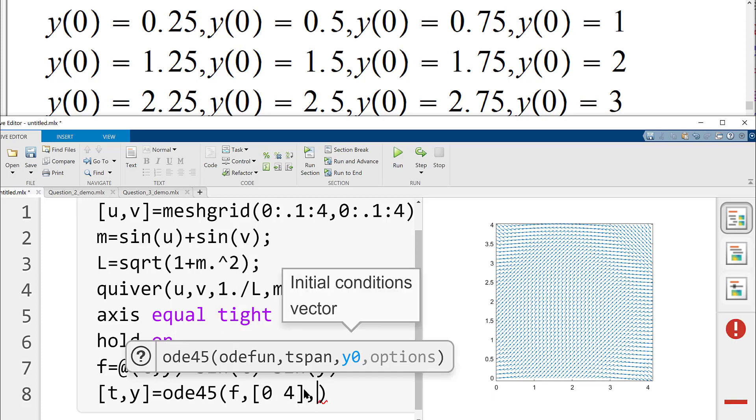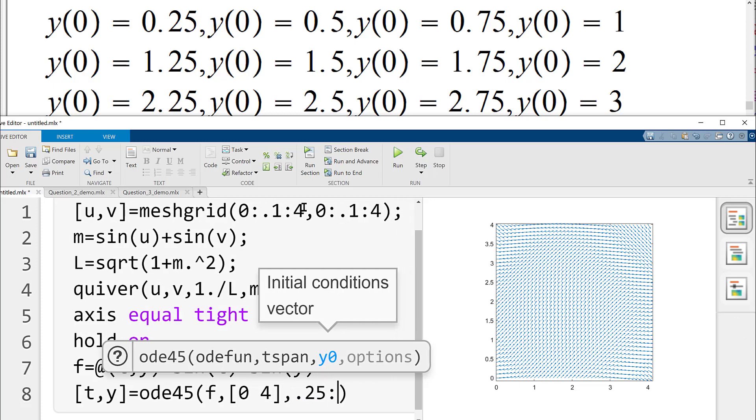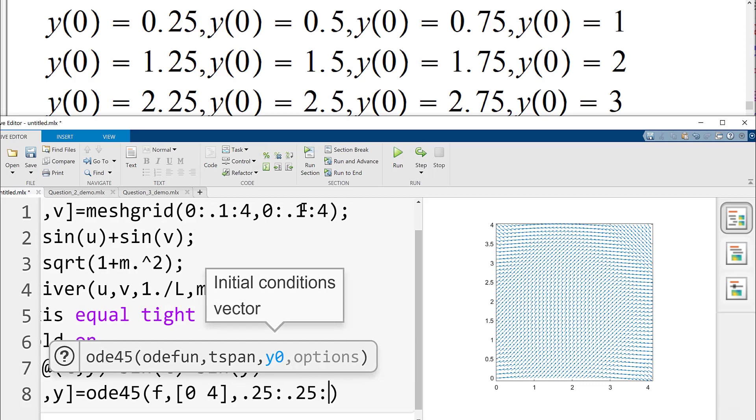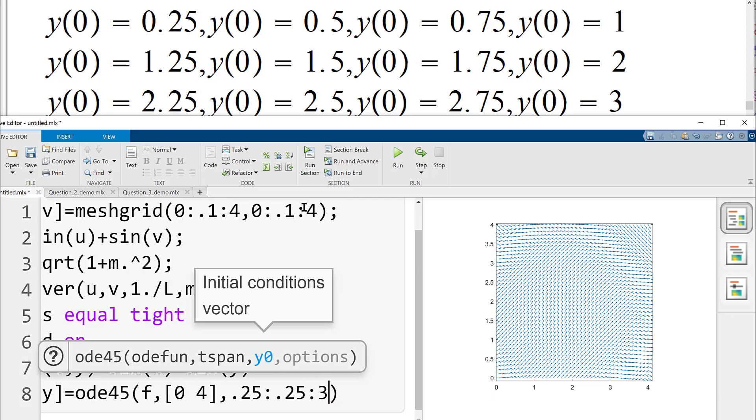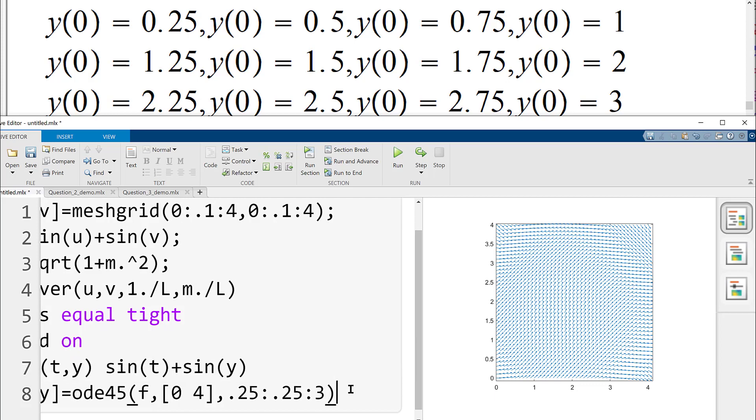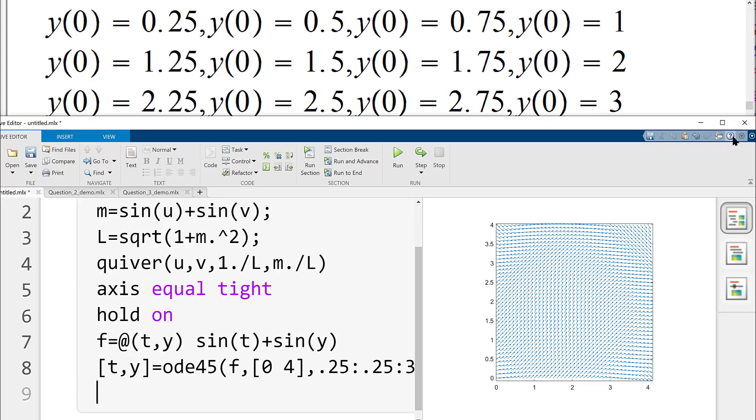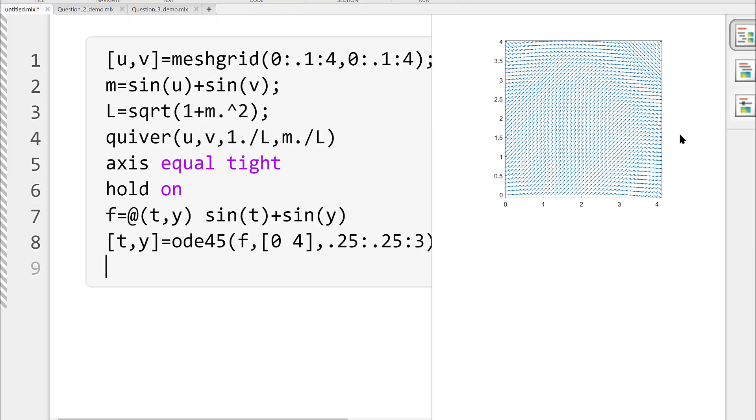So our t is ranging from 0 to 4, right? And then what we will do now is that we shall plot the initial condition. In this case, we have a luxury because the initial conditions are just values that are equally spaced from 0 to 3. And let's suppress the output here again. And now I am going to just enlarge this so that we can see the entire output.